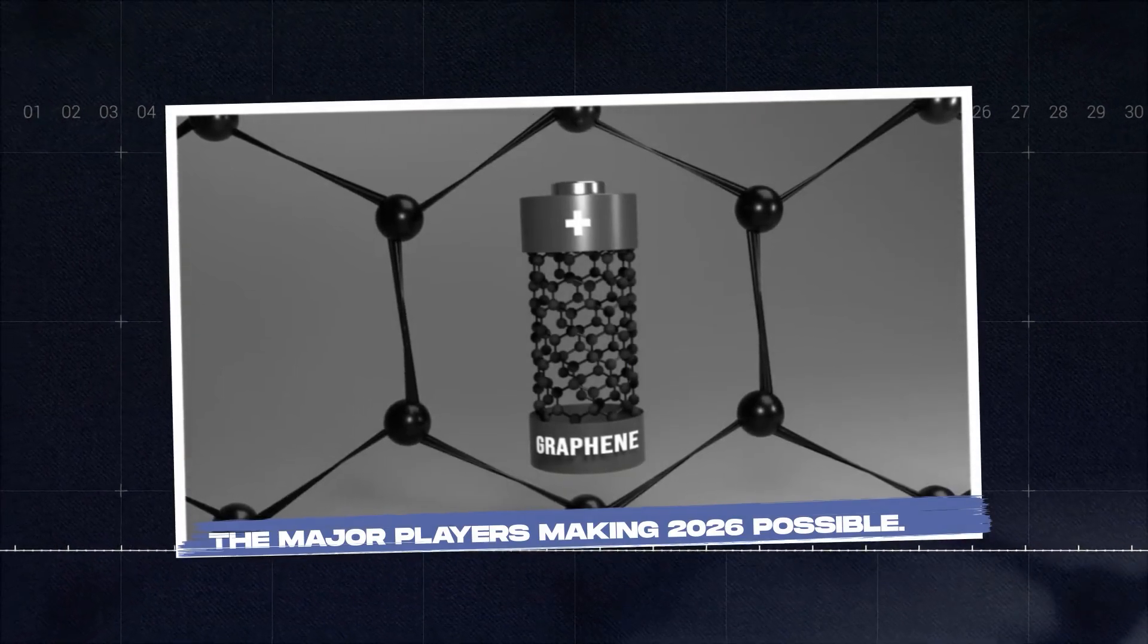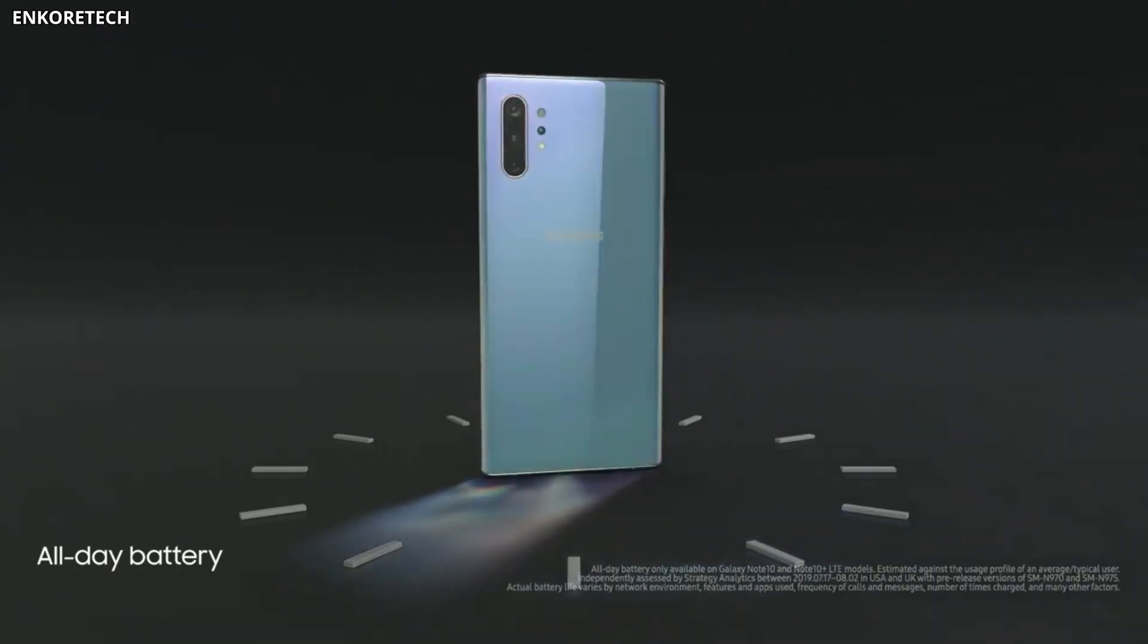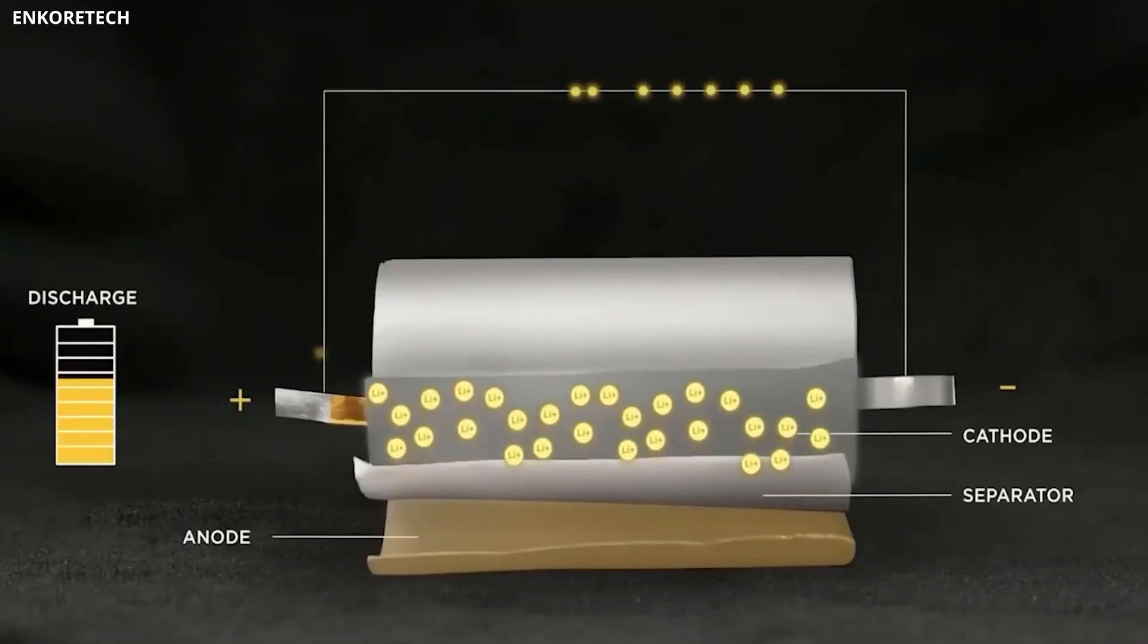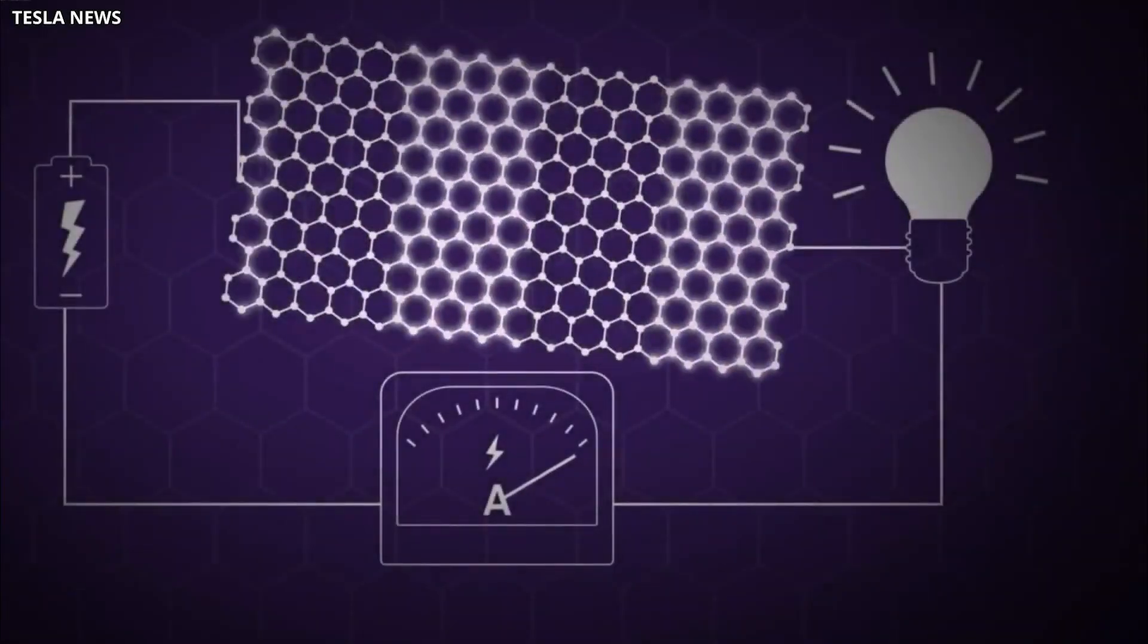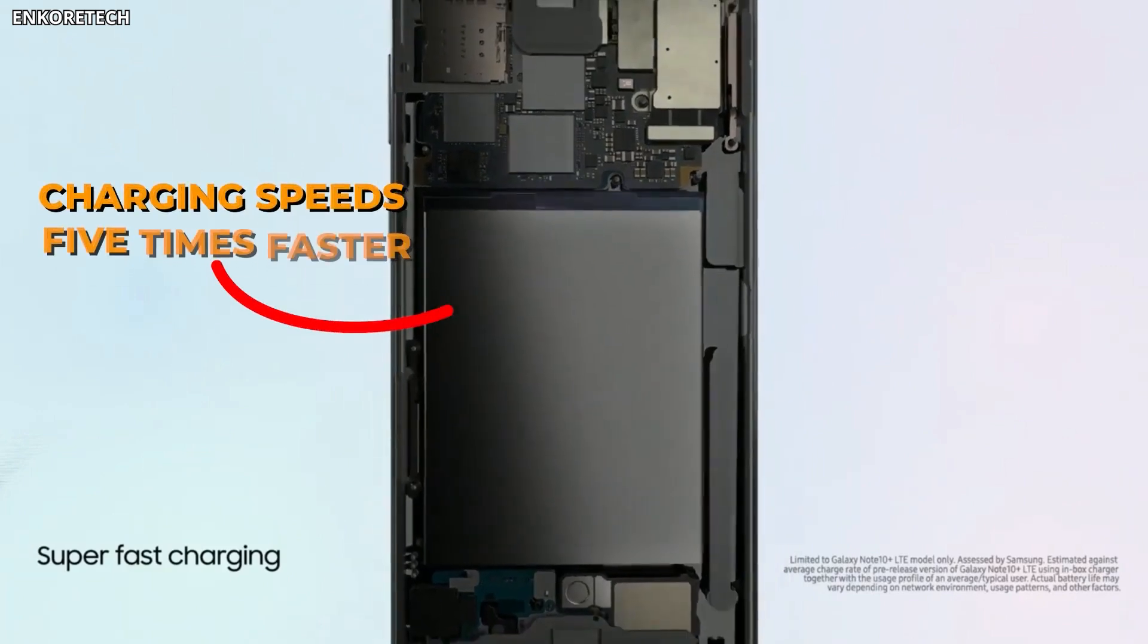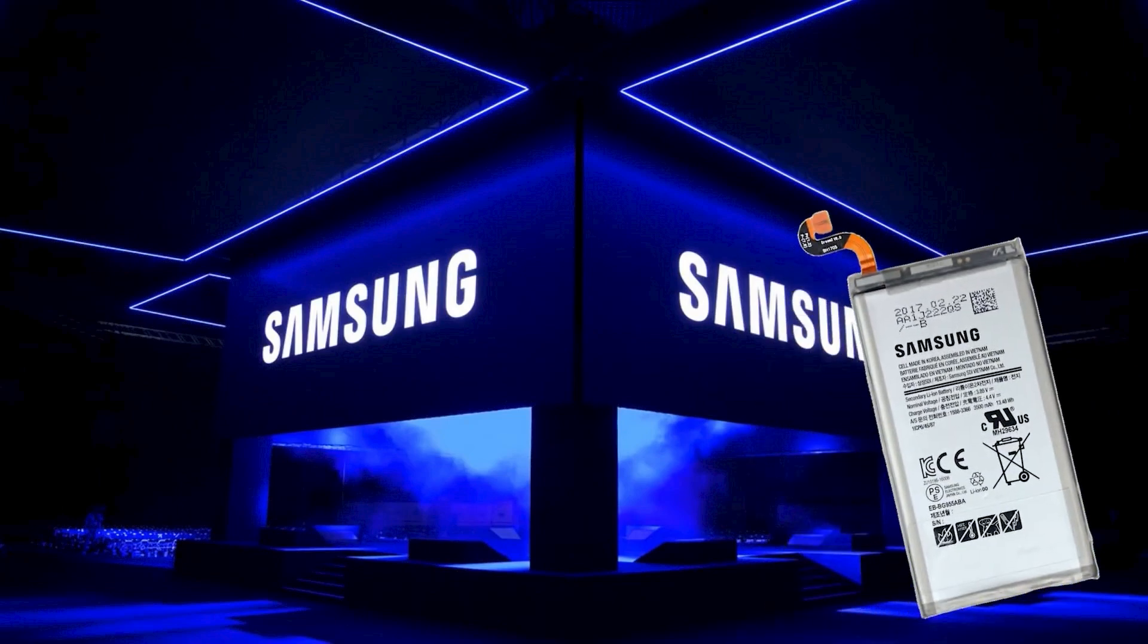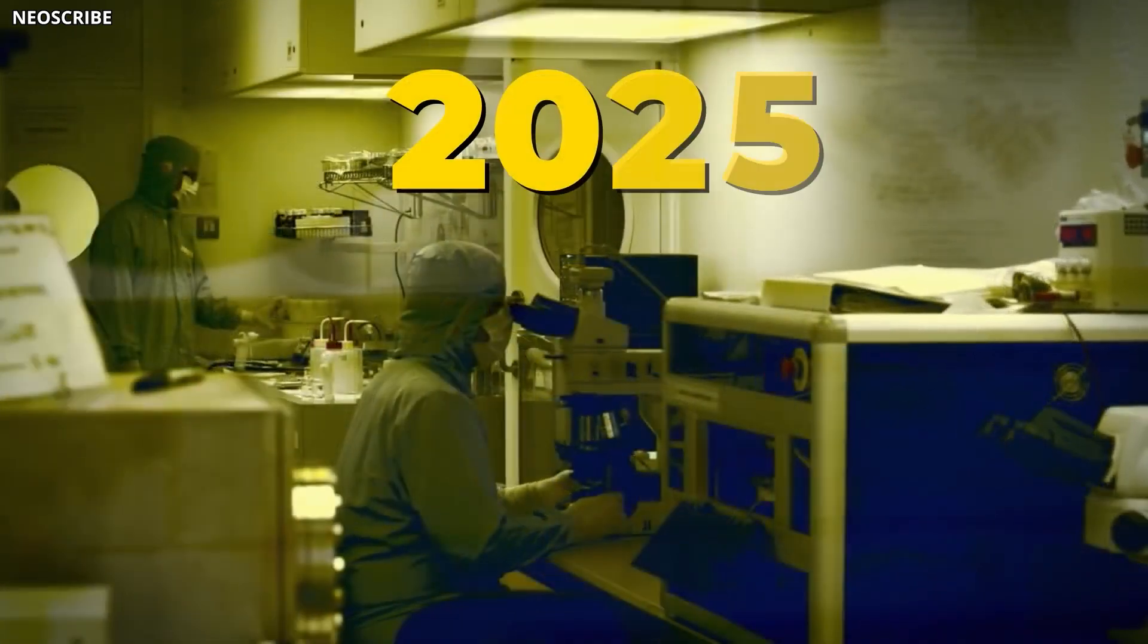The major players making 2026 possible. Samsung has been working on graphene batteries for years. Their Advanced Institute of Technology demonstrated what they call a graphene ball battery, which uses graphene-coated particles to improve both the anode and cathode. The results were significant: 45% higher capacity and charging speeds five times faster than standard lithium-ion cells. Samsung hasn't announced a specific product yet, but reports suggest integration into consumer electronics could begin after 2025.